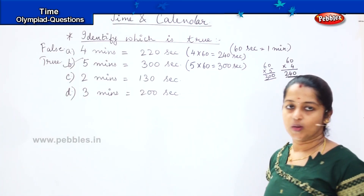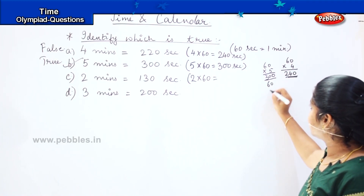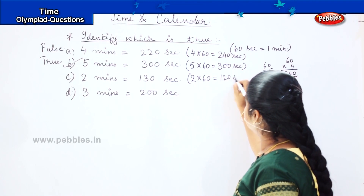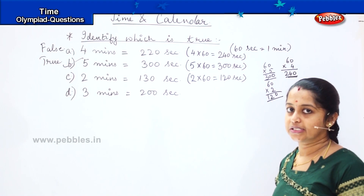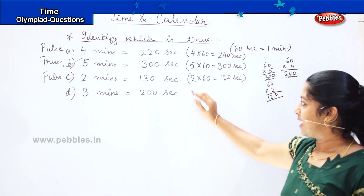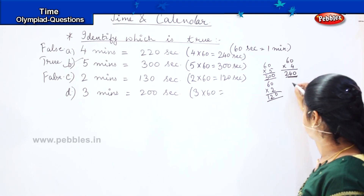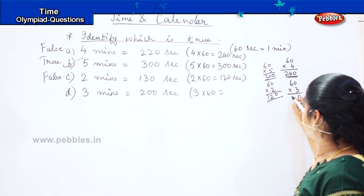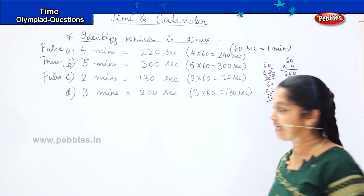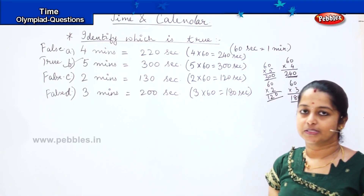For option C, 2 minutes: multiply 2 into 60. So 60 into 2 — 6 twos are 12 — so we should get 120 seconds. But the answer given is 130, so it is a false statement. For option D, 3 minutes: multiply 3 into 60. So 60 into 3 — 6 threes are 18 — so we should get 180 seconds. But they gave 200 seconds, so again it is a false statement. The correct answer is: 5 minutes equals 300 seconds.